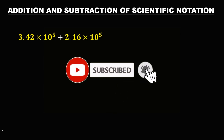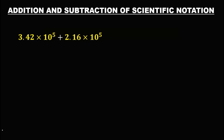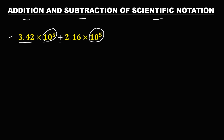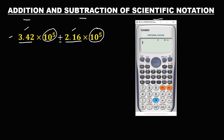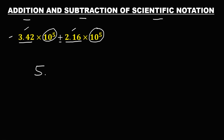Let's solve this problem. For addition and subtraction of scientific notation, take note that we can only add and subtract if the given values have the same exponents. For this given, to find the sum, since the exponents are the same, just add the two numbers: 3.42 plus 2.16 equals 5.58. So the answer is 5.58 times 10 to the power 5.